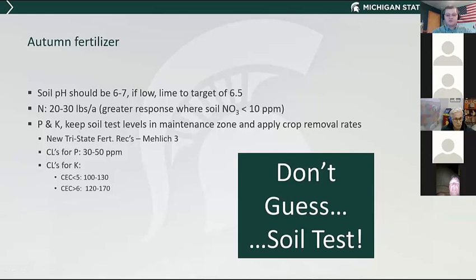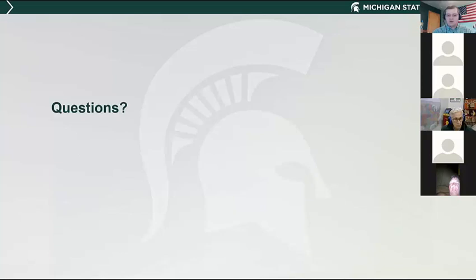Remember, we have the new tri-state fertilizer recommendations. Instead of Bray P1, everything is in Mehlich 3 now. This changed a little bit for wheat — not significantly, but a little bit. With Mehlich 3, our new critical levels for phosphorus are 30 to 50 ppm. The critical levels for potassium on sandy or lighter textured soils are 100 to 130, and on heavier soils it's 120 to 170. With that, I can take questions at the end.